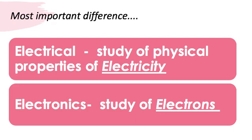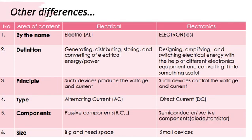Now that we know the most important difference between the two, let us cover some other areas of interest. To make things easy, I have divided these differences in the form of a table. The first area is the name. As you can see, I have highlighted a part of each word. 'Electrical' uses the Latin suffix meaning anything related to electric or electricity, whereas 'electronics' derives from electrons — that is why the highlighted portion is there to show the main difference.